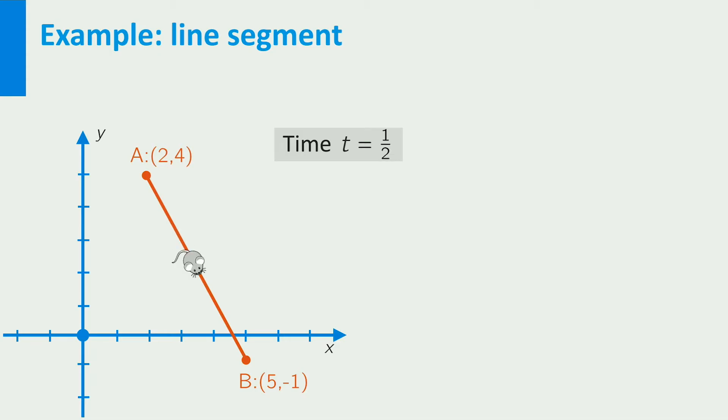At t equal to 1/2, it is halfway through the line, so the displacement is one-half of the vector AB, etc.